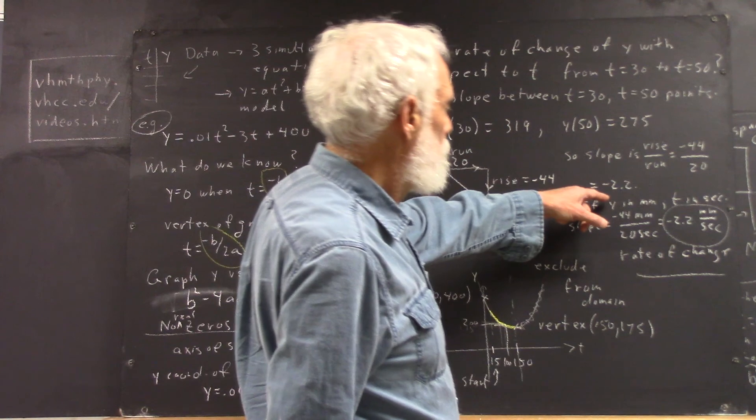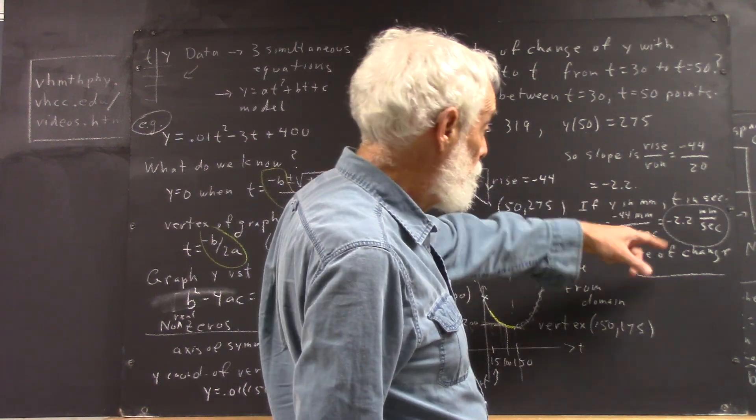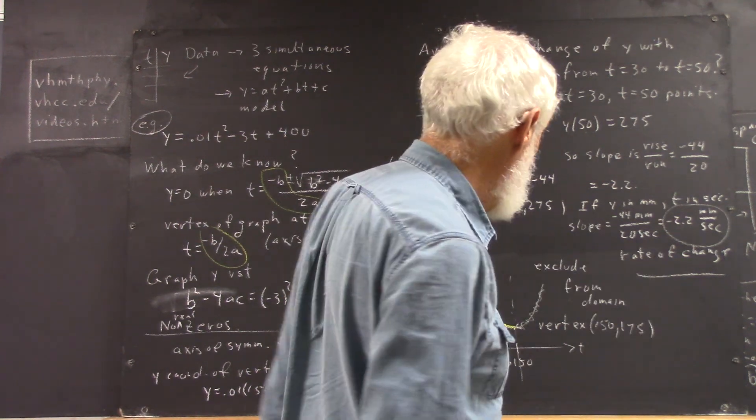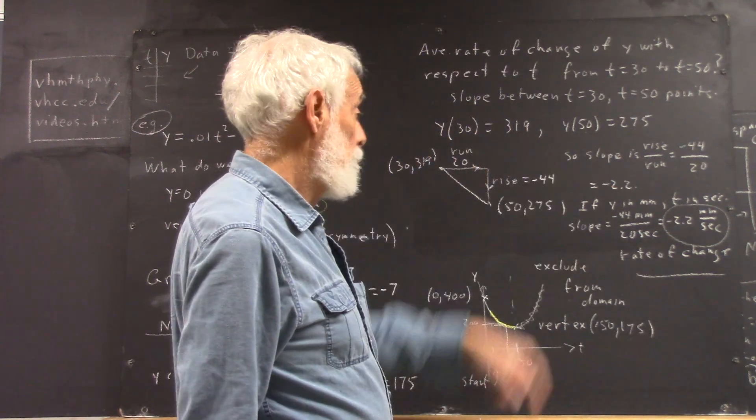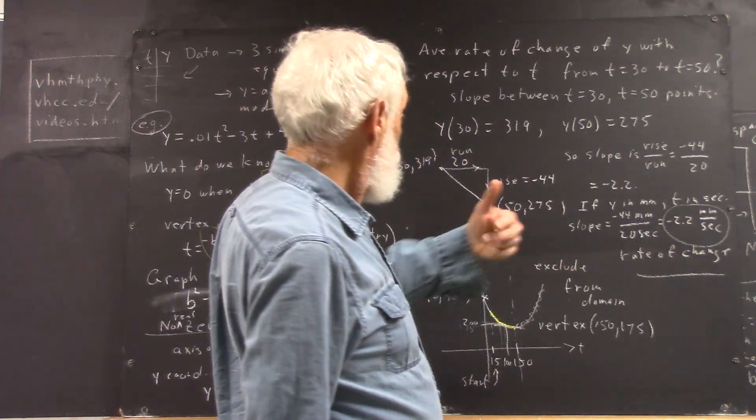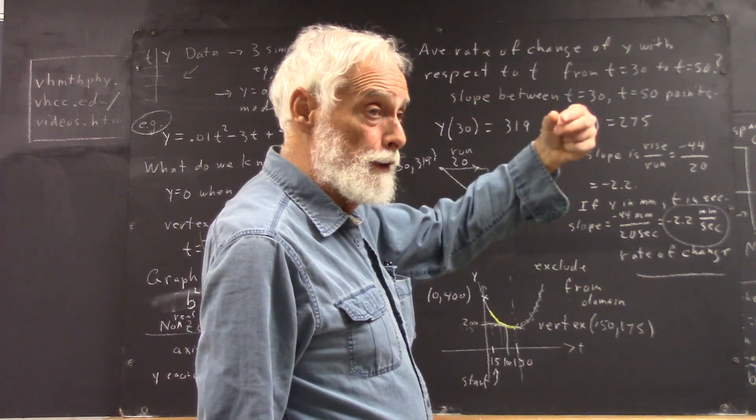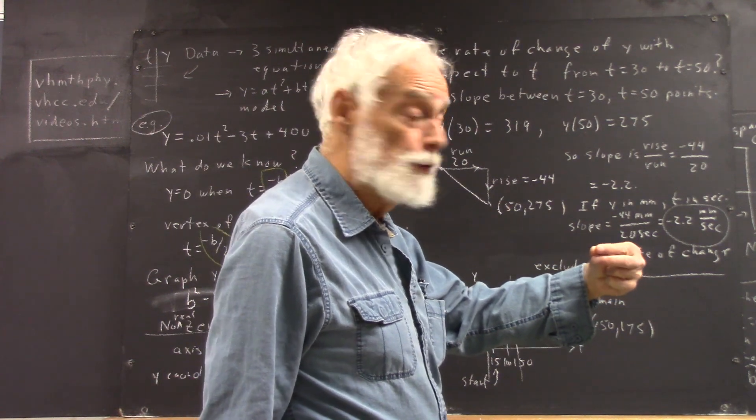Now, if you just get the slope, say negative 2.2, that's okay, unless I ask you to actually interpret it. But it's always a good idea to interpret it and say what it means. There's our rate of change. And this means that, on the average, between 30 seconds and 50 seconds, this thing is going down at about 2.2 millimeters per second.